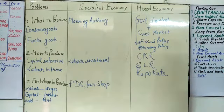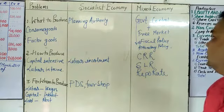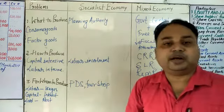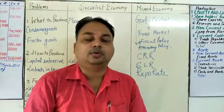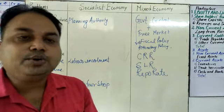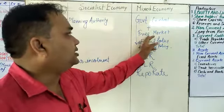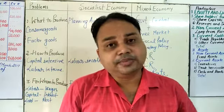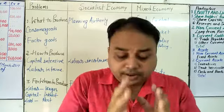Now let us come to the mixed economy. Mixed economy is controlled by both the government and the free market. The free market includes private entrepreneurs and private industries operating in different sectors. Simply put, in a mixed economy, government control plus free market control operate together. Both the government and private entrepreneurs take decisions, and this type of economy is called mixed economy.